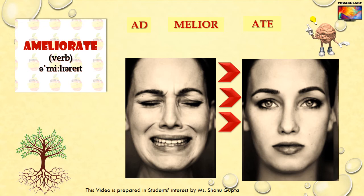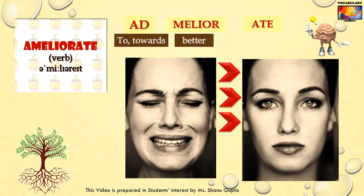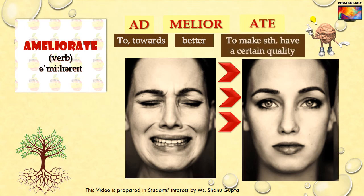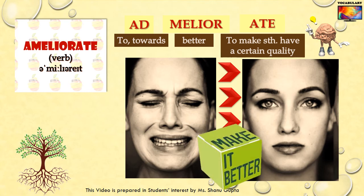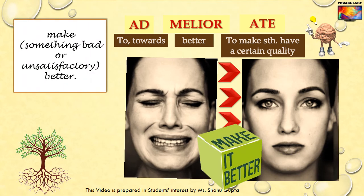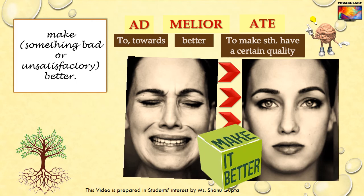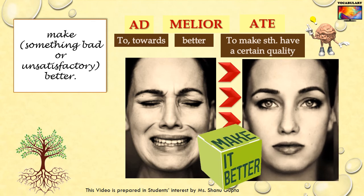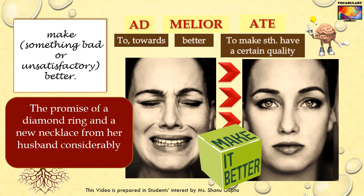The last word is ameliorate. Made up of the prefix ad meaning to, the French root mellior meaning better, and the suffix ate meaning to make something have a particular quality, ameliorate in short means to make better. According to the Oxford dictionary, to ameliorate is to make something bad or unsatisfactory better. Note: when something good becomes better, you say it improves; only when something bad becomes better do you use ameliorate. Example: The promise of a diamond ring and a new necklace from her husband considerably ameliorated her mood.